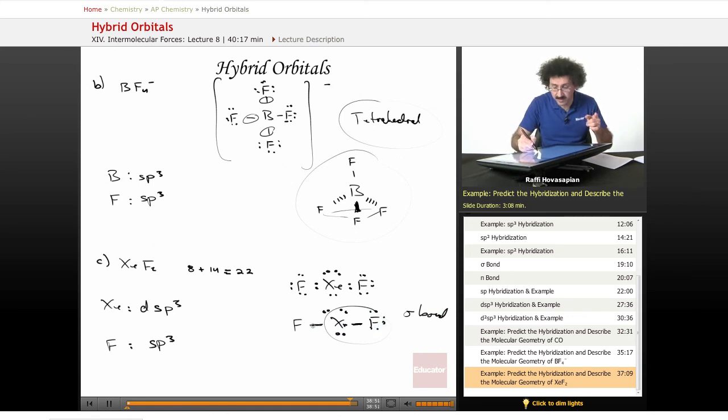Another, this is the same thing on this side. A dsp3 on xenon is interacting with an sp3 on fluorine for this single bond. The lone pairs on fluorine occupy the other sp3 hybrid orbitals on fluorine, and the three lone pairs on xenon occupy the last three dsp3 hybrid orbitals on the xenon atom.